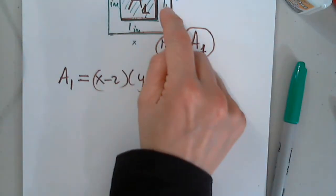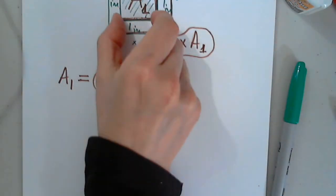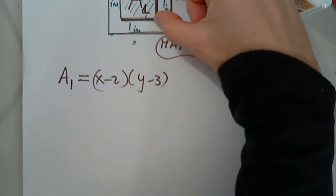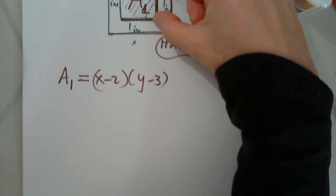So if this is X and I have one inch here and one inch here, so this must be X minus 2. If this is Y and I have two inches here and one inch here, obviously this must be Y minus 3. Great job.